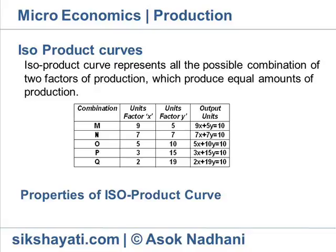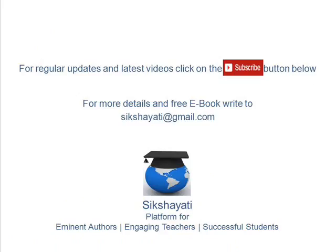Properties of Isoproduct curves: Isoproduct curves slope downwards to the right. Isoproduct curves are convex to the origin. Isoproduct curves cannot intercept each other. An isoproduct curve lying to the right represents larger output. Thank you for watching the video.